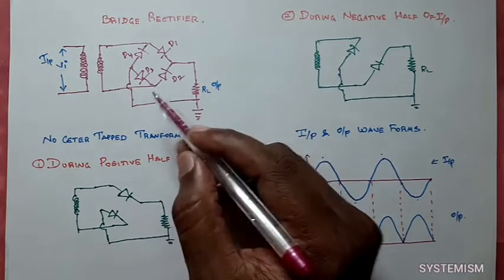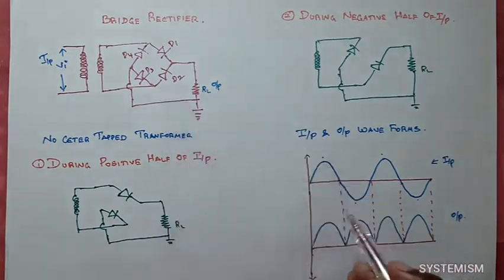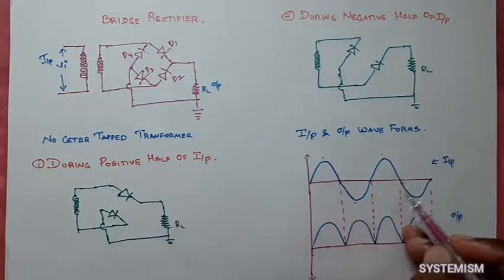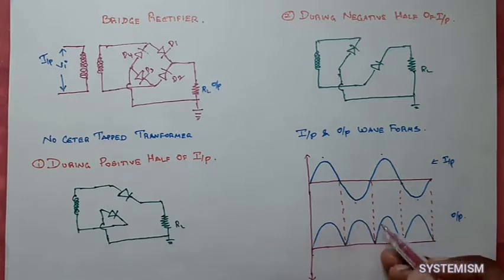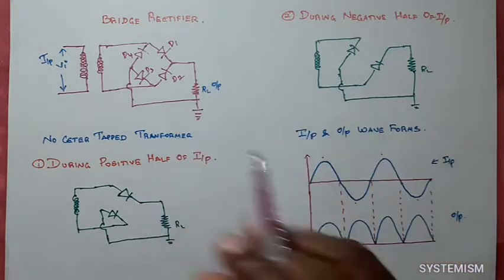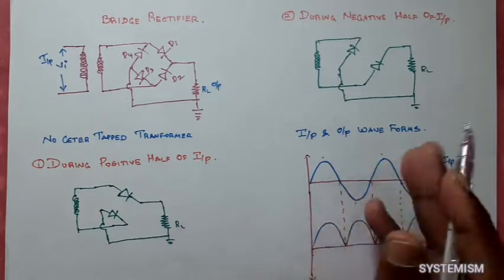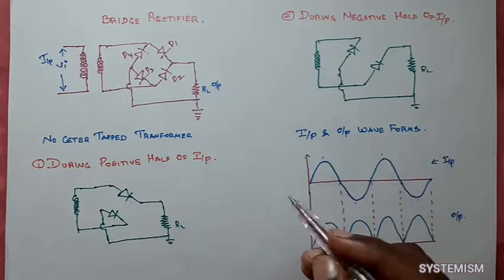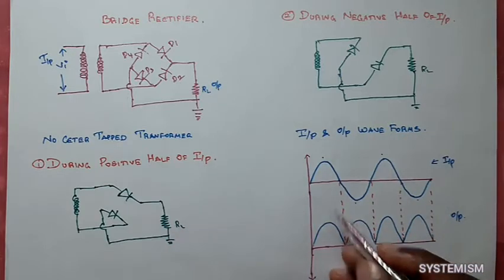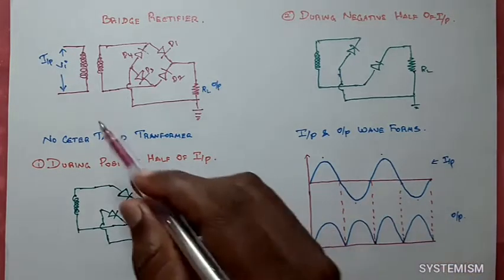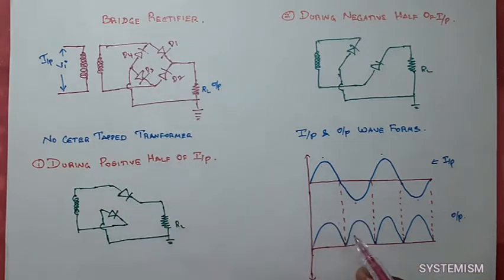Now we need to know how this waveform is created. This is your input waveform and this is your output waveform — same as your full wave rectifier, as we have seen in our previous video.